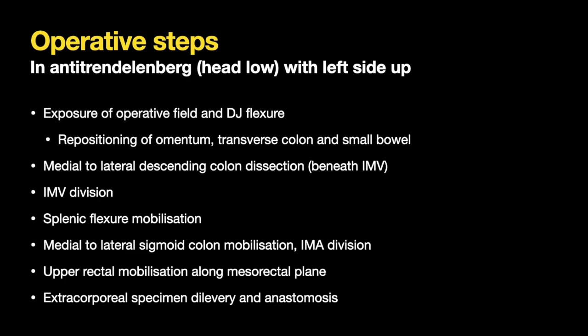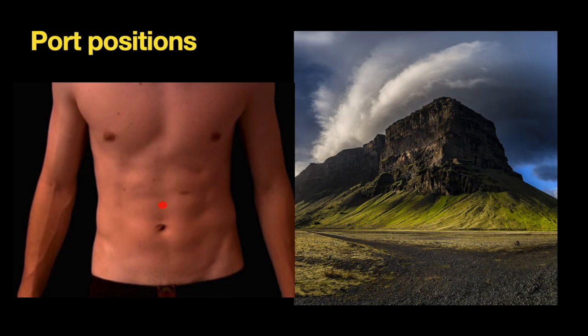The operative steps are detailed here. The surgery is done in anti-Trendelenburg position with left side up. The field is first exposed with exposure of the DJ flexure and root of mesentery, with repositioning of omentum, transverse colon and small bowel. Medial to lateral descending colon mobilization is initially taken up beneath the IMV, following which the IMV is divided. Splenic flexure mobilization is done in a sub-mesocolic and supra-colic and lateral manner. Following this, medial to lateral sigmoid mobilization and IMA division is done. Upper rectal mobilization along the mesorectal plane is also done to avoid tension, and finally extracorporeal specimen delivery and anastomosis is performed.